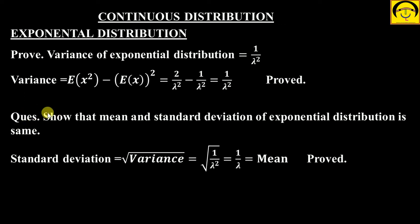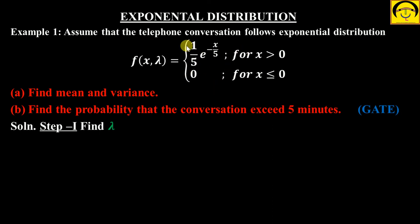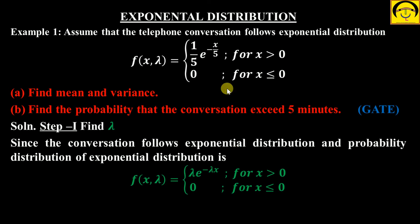This is an important result — sometimes they directly ask this question in examination. So let's consider one or two examples. Assume that the telephone conversation follows exponential distribution. Jis mein yeh PDF diya hai, theek hai. Haame mean aur variance nikalna hai. Mean kya nikalna hoga? Mean exponential distribution mein 1/λ hota hai, to pehle lambda nikalo. Lambda is distribution mein kya hoga — aap pehle isko compare karo original PDF se.